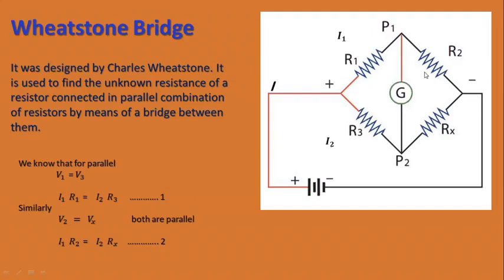Now similarly, look at the other side. Here R2 and Rx are parallel to each other, so voltage would be the same for R2 and Rx. Therefore, V2 equals Vx because of the parallel combination. We can see I1 flows through R2 and I2 flows through Rx. Therefore, V2 equals I1·R2 and Vx equals I2·Rx. This is equation number 2.